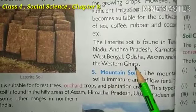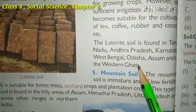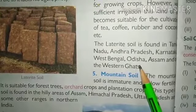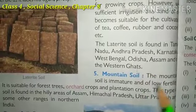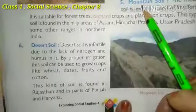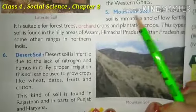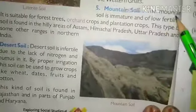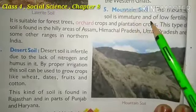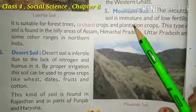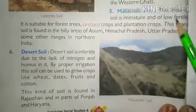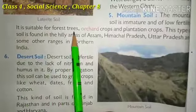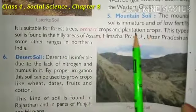Later I will show you a map to explain which states have which type of soil. Now we come to number five, that is mountain soil. Mountain soil is immature and of low fertility - it is not properly developed and its productive capacity is also low.